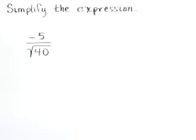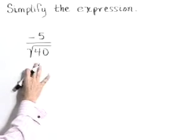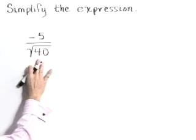Simplify the expression: negative 5 over the square root of 40. This expression isn't in simplest form because we have a radical in the denominator.